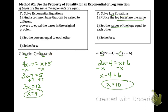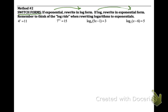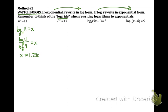The second method is switching forms — if it's exponential, rewrite in log form; if it's log form, rewrite in exponential. Example 1: 4 to the x equals 11. We cannot rewrite 4 and 11 using a common base, so switch to log form: log base 4 of 11 equals x. Use change of base on your calculator: log(11) divided by log(4), which gives approximately 1.730.